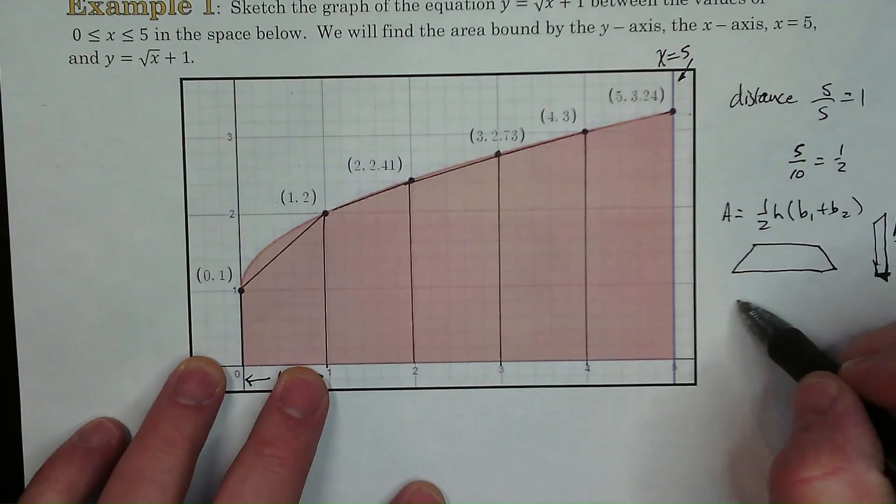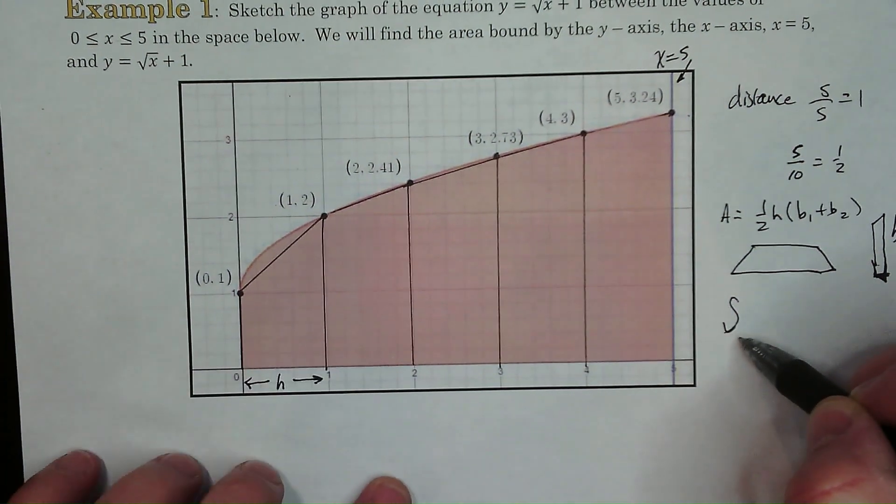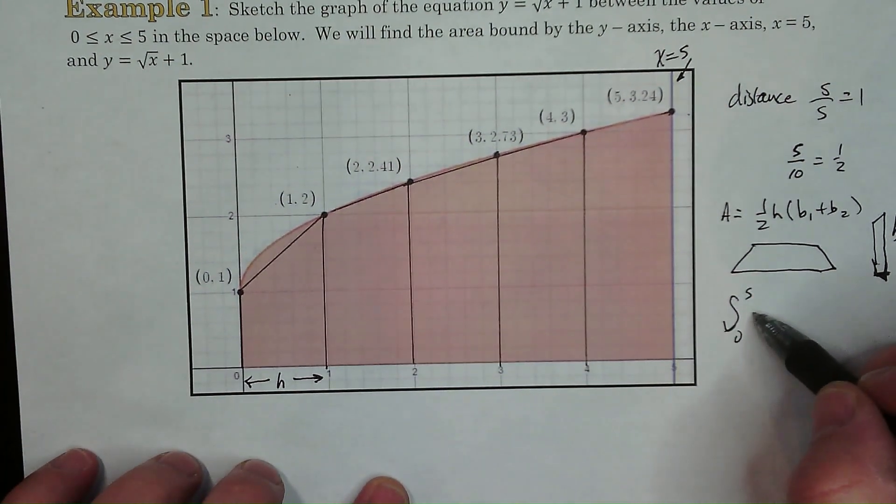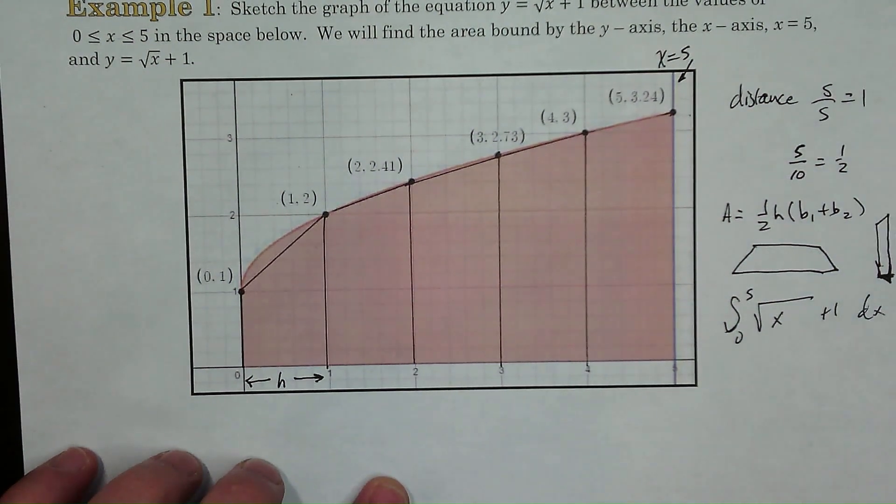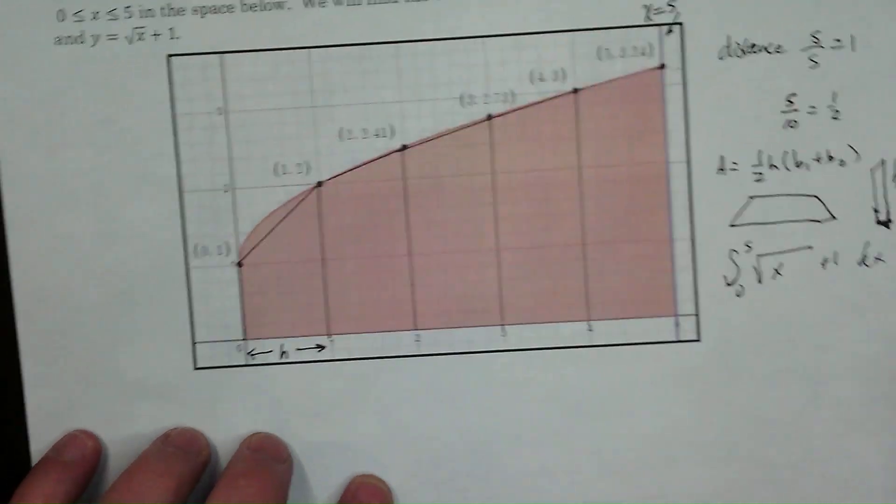So we're going to find the area of each one of these. We're going to add them up and that's going to give us the approximation of the integral from zero to five of square root of x plus one dx.